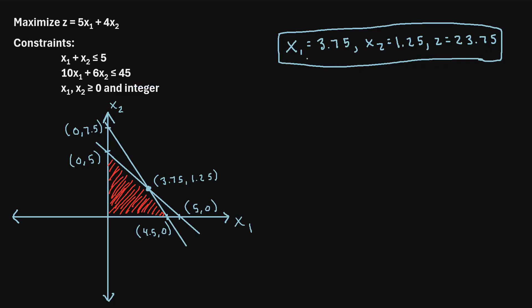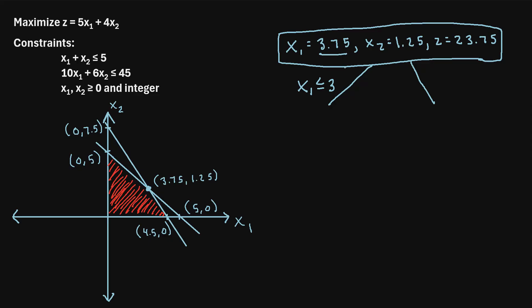We know this cannot be our final solution because x1 and x2 are not integers. This is where the branch and bound method comes in. We identify the variable with the largest value — x1 has the larger value of 3.75. We create branches by rounding x1 down to the nearest integer, which is 3, giving us x1 less than or equal to 3, and rounding it up to 4, giving us x1 greater than or equal to 4.